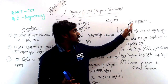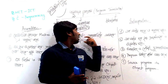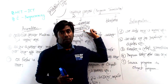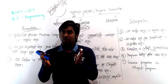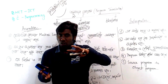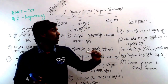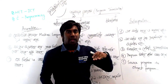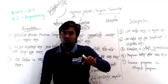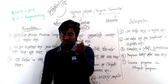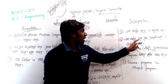Next is the interpreter. The interpreter applies translation line by line. Unlike the compiler, the interpreter processes and translates the program one line at a time, executing each line as it goes.